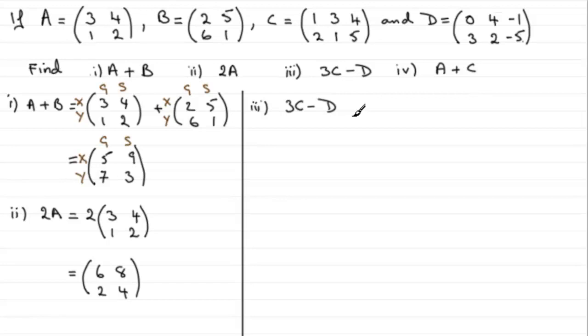Okay, let's see how you got on. Well, I'm going to show the working first of all. Going to write down that we've got 3 times the matrix C. Matrix C is (1 3 4; 2 1 5), and then we subtract the matrix D which is (0 4 -1; 3 2 -5).